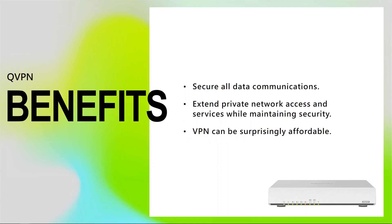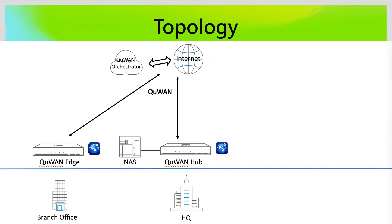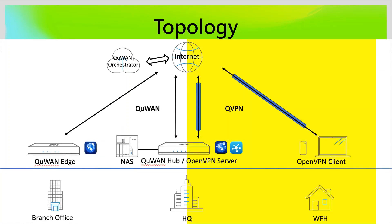Then we go to the settings. For the topology, we already have an existing network in the HQ and the branch office connection. Outside of the office, instead of using a QHORA as OpenVPN client, we will use a PC and mobile phone to connect.